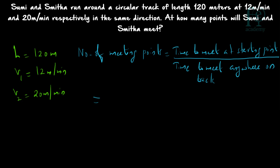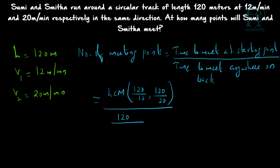The time to meet at the starting point equals LCM of (L/V1) and (L/V2), which is LCM of 120/12 and 120/20, giving LCM of 10 and 6, which equals 30. The time to meet anywhere on the track equals 120 divided by the relative speed. Since they move in the same direction, relative speed is 20 minus 12 equals 8, so 120 divided by 8 equals 15. Therefore, 30 divided by 15 equals 2 points.